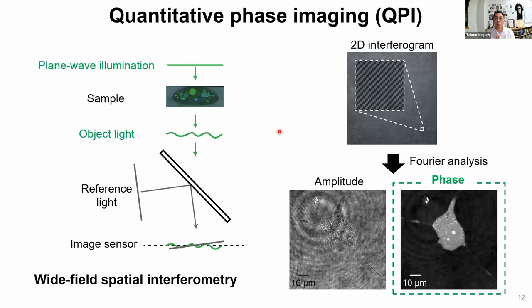The basic idea of quantitative phase imaging is as follows. We start from a plane wave and illuminate it onto the sample. The sample has a refractive index distribution, so after passing through, the wavefront of the light is distorted. To measure this distortion, we use another plane wave as reference light, then make an interferometric detection onto the image sensor — a kind of off-axis spatial interferometry. From the 2D interferogram and Fourier analysis, we can visualize amplitude and phase images.